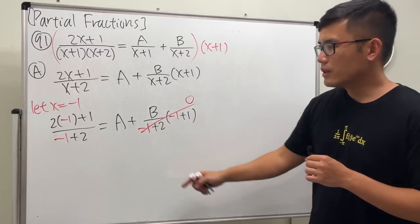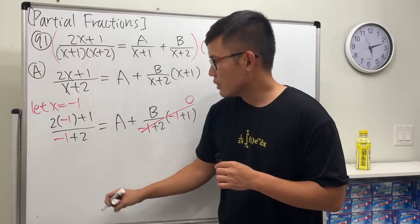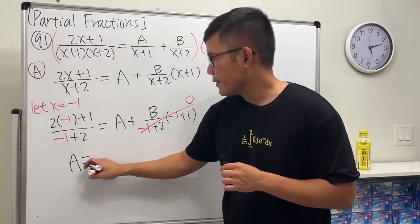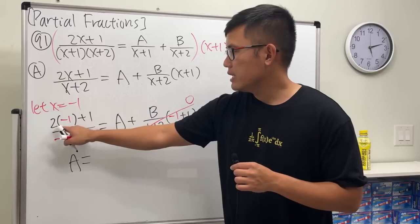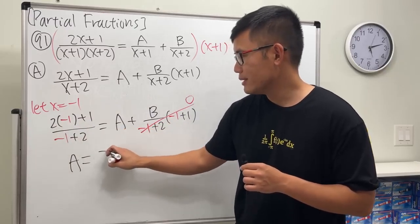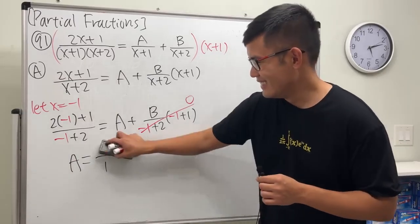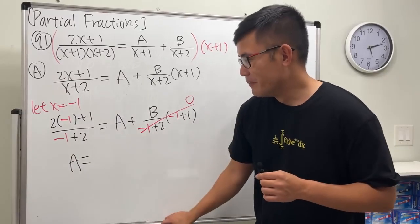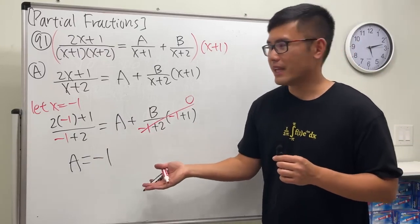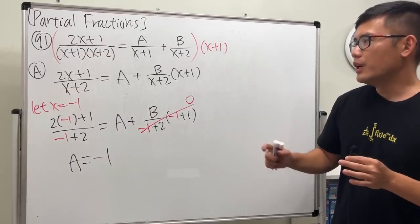So as you can see, a is just equal to that. a is equal to: negative 2 plus 1 is negative 1, over 1, so just negative 1. a is just equal to negative 1. Done.